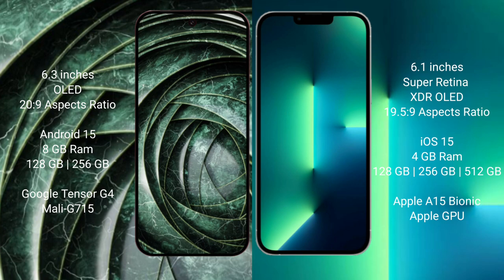Google Pixel 9a runs on the Android 15 operating system. iPhone 13 runs on iOS 15. Google Pixel 9a comes with 8GB RAM and 128GB or 256GB internal storage with a Google Tensor G4 processor and GPU. iPhone 13 comes with 4GB RAM and 128GB, 256GB, or 512GB internal storage with an Apple A15 Bionic processor and Apple GPU.